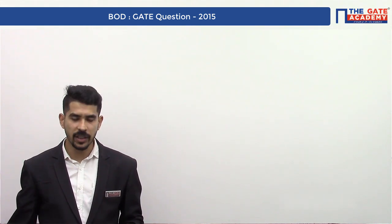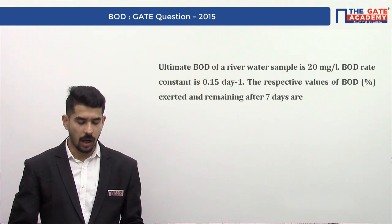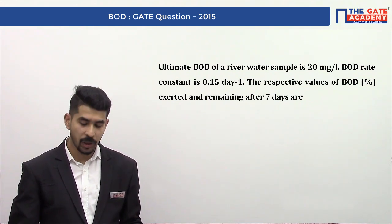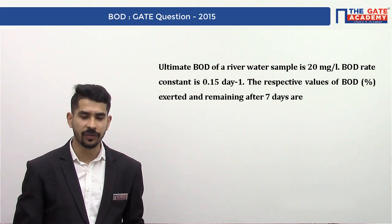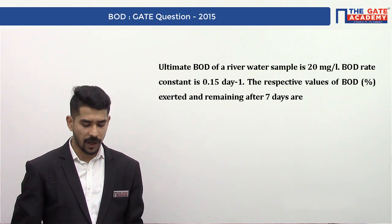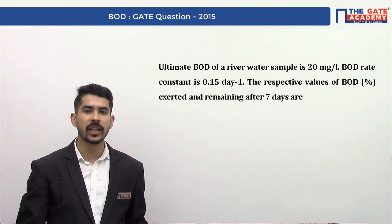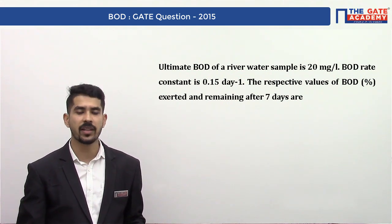The question says the ultimate BOD of a river water sample is 20 milligrams per liter. The BOD rate constant is 0.15 per day. The respective values of BOD in percentage exerted and remaining after seven days are?